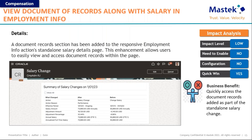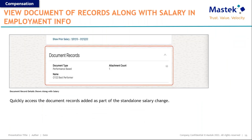The next feature is view document of records along with salary in employment info. For those using responsive pages in Oracle, you're aware of the employment info quick action. A document record section has been added to the responsive employment info quick actions standalone salary details page. This enhancement allows users to easily view and access document records within the page itself. On the employment info page you can now see the document record section available at the bottom.